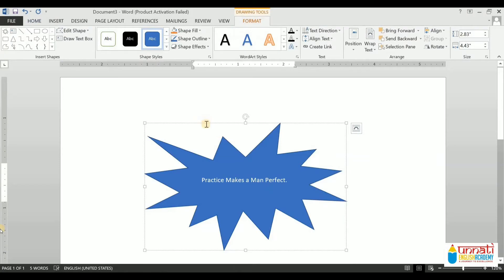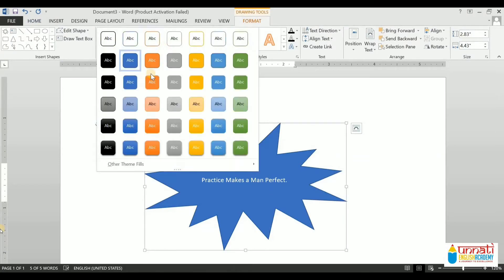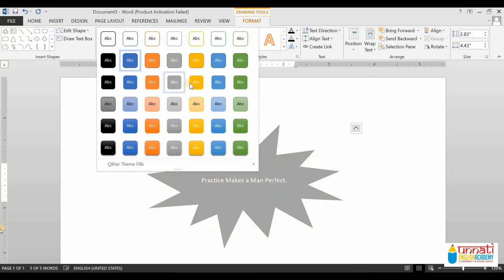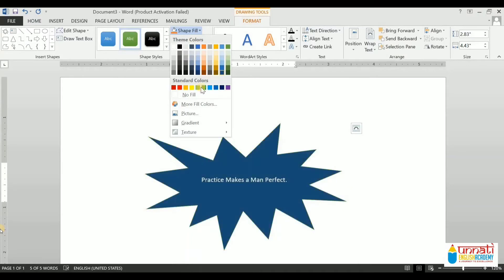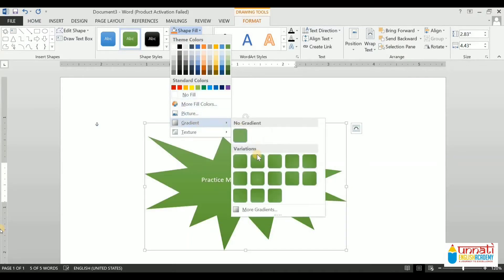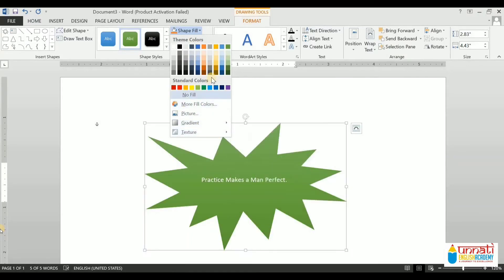Like text boxes, you can also change the appearance of shapes. For that, again you have to use the Format tab only. There are many options available like Shape Fill, Shape Outline, Shape Effects. These options we have already seen. To change the fill color, click the drop-down menu arrow of the Shape Fill option. You can choose any color.